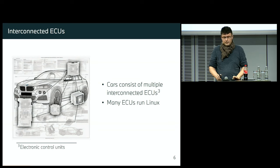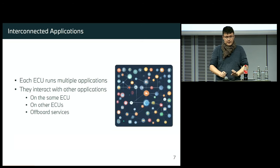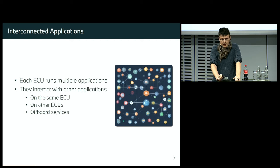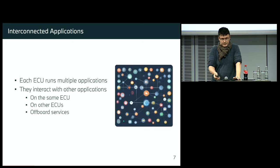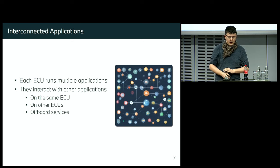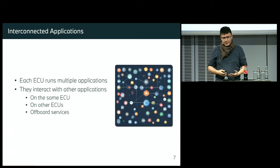When we look into the car, we see that cars consist of a lot of different computers — we call them ECUs or electronic control units. There are many of them. The bigger ones usually run Linux, like normal Linux you have at home. Even inside a single ECU, it runs tens and hundreds of applications. Each of these applications interacts with others inside the same computer, inside the same ECU, in others across the car, or with services outside the car — like a backend, other cars, environment, traffic lights, anything outside. There is a huge web of applications that chaotically interact with each other.